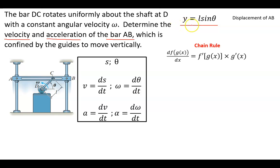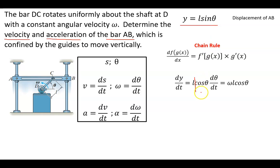We're going to take the first derivative of this displacement function. The derivative of Y with respect to time means we take the derivative of L·sin(θ). Using the chain rule — and keeping in mind that L is a constant so it steps outside the derivative — the derivative of sine theta is cosine theta. Leave the inside alone, then take the derivative of theta, which is dθ/dt, which is just the angular velocity omega.